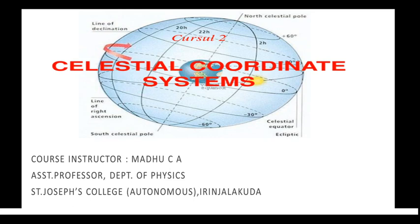We know that the position of a place on earth is defined by two coordinates which are latitude and longitude. So with the help of latitude and longitude you can determine the position of a place on earth. Similarly, the position of a heavenly object, a celestial object, can be described by knowing its celestial coordinates.